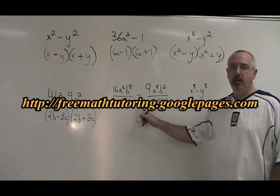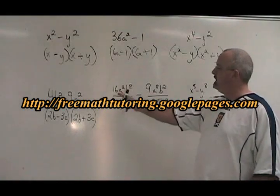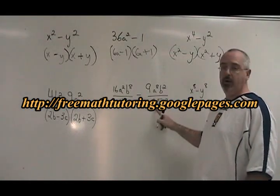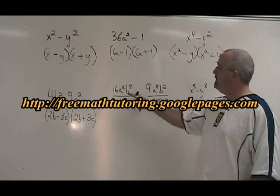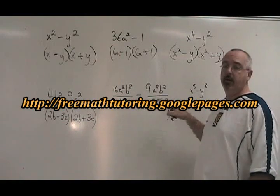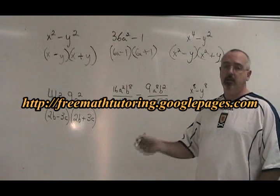This one is very complicated looking, but it is a difference of squares because 16, 49, 9, 25 are all squares. a squared, b to the 8, a to the 8, b squared, and c squared all have even numbered exponents, so they are squares.